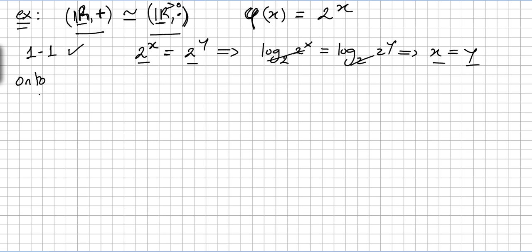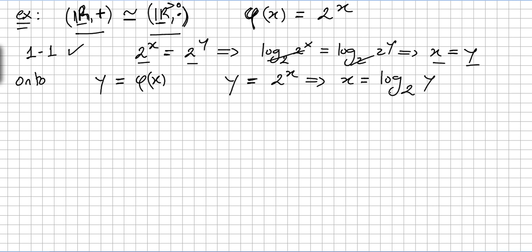Now let's prove that phi is onto. We have to prove that for any Y in the positive reals, there will always be a phi of X equal to Y. For any such Y, we just set X equals log base 2 of Y. So for any Y in the image, there will always be an X, namely log base 2 of Y. Therefore phi is onto.